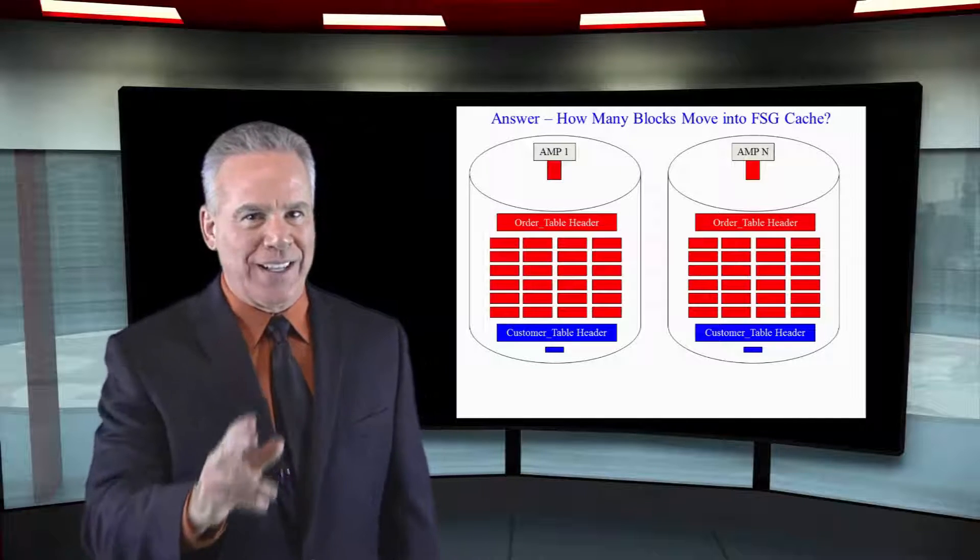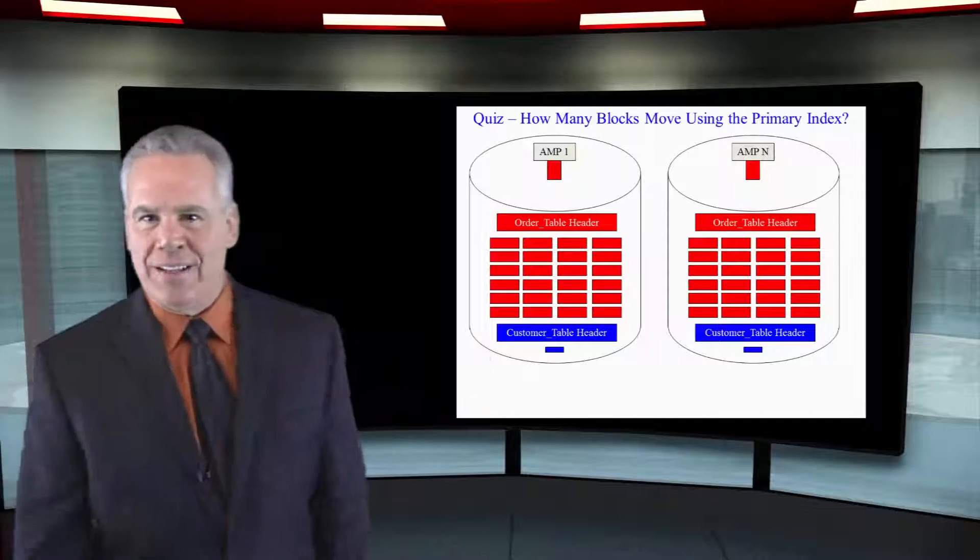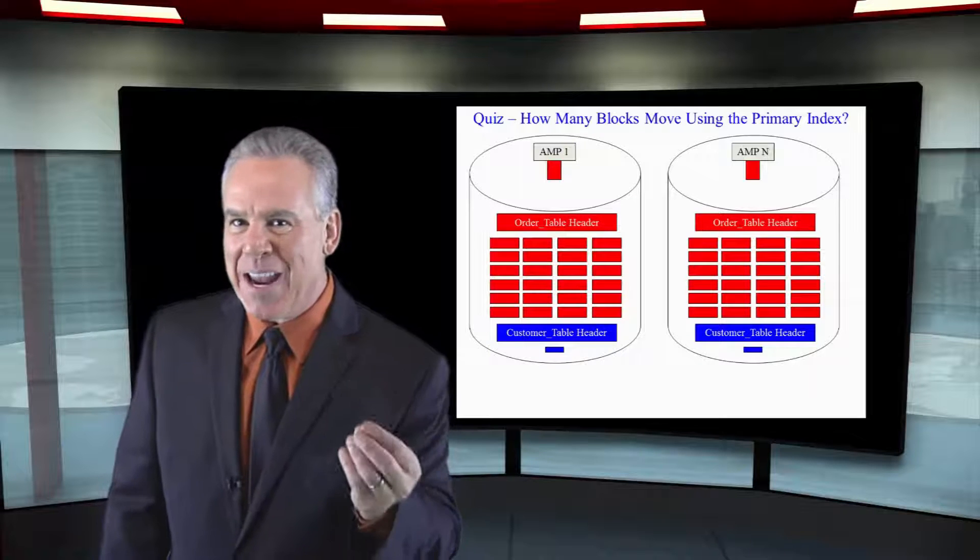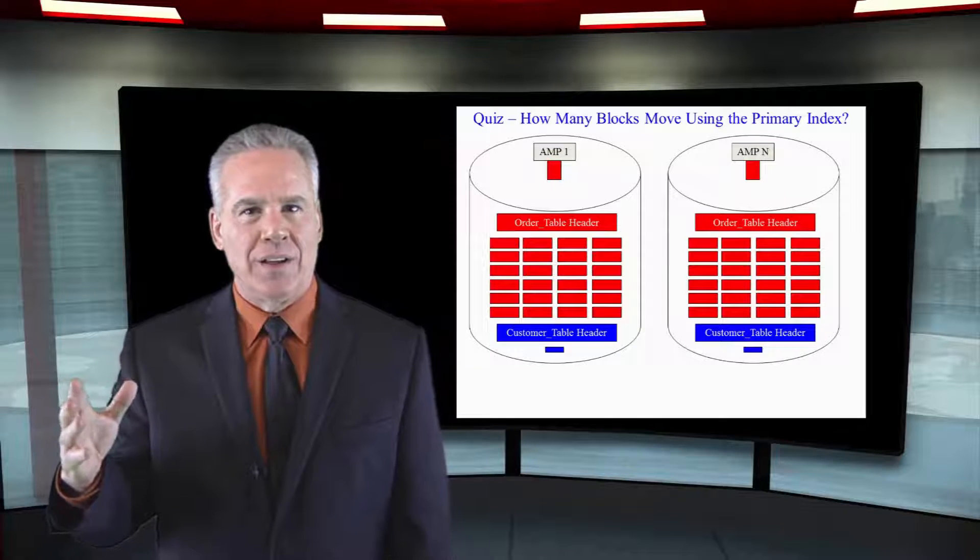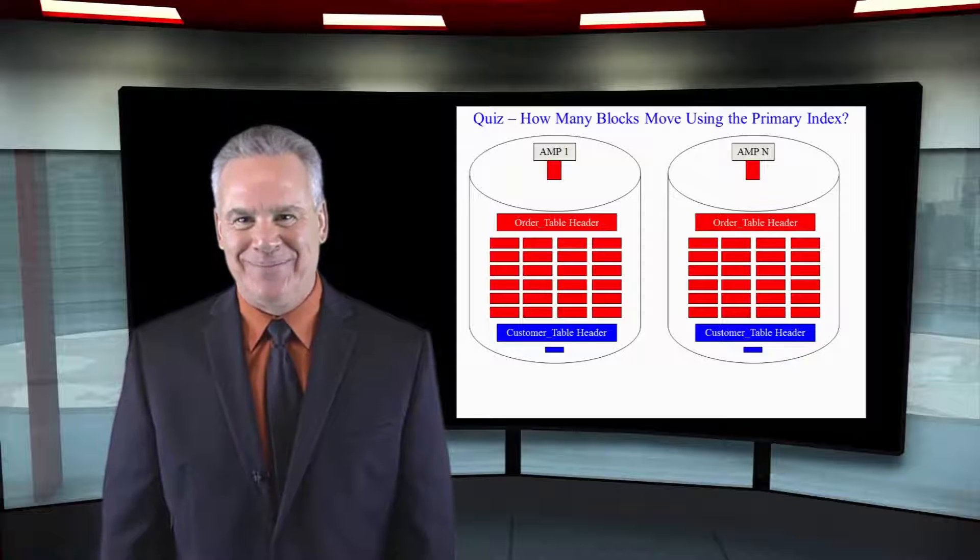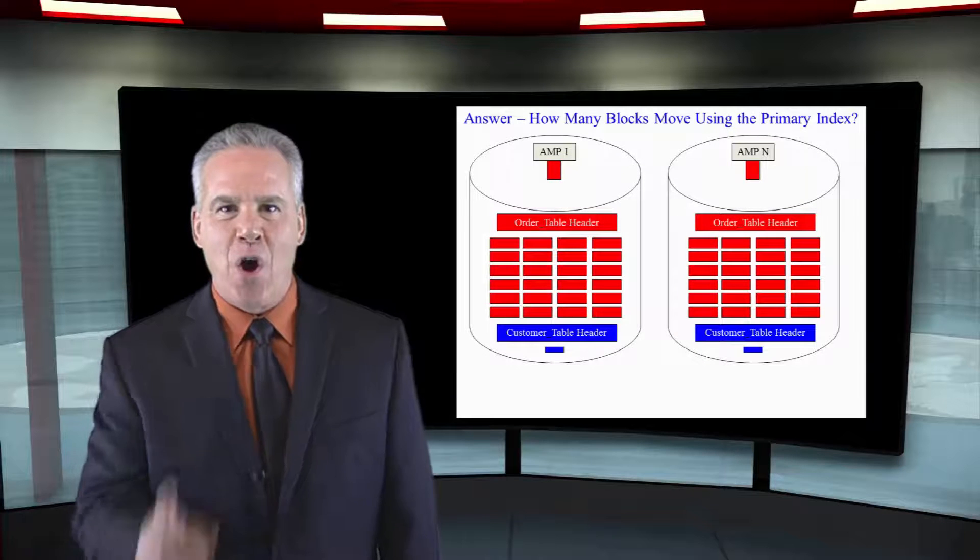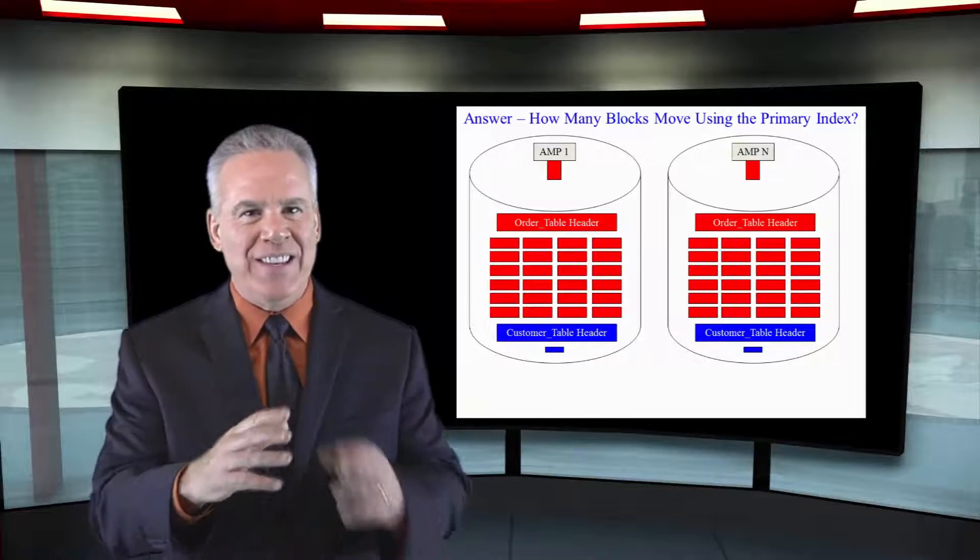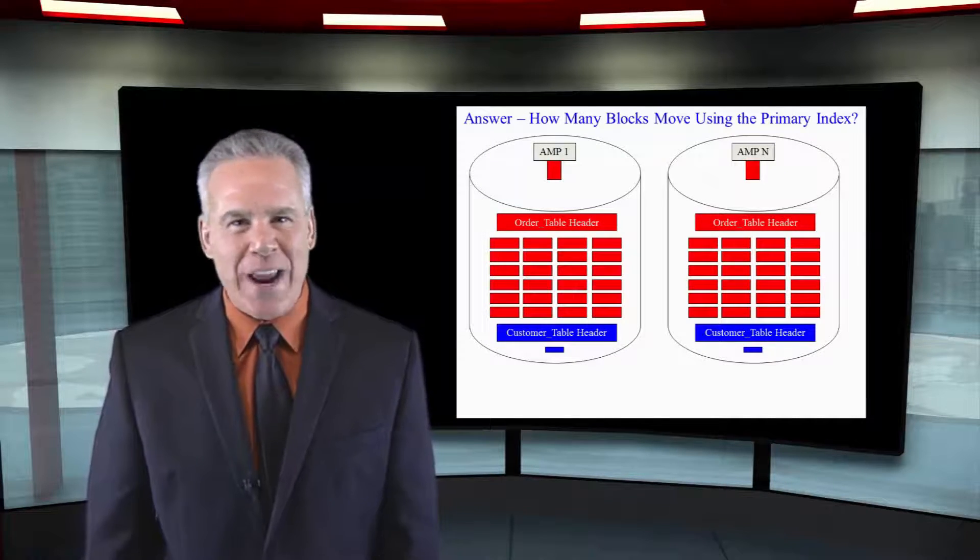Now I'm going to ask you a really interesting question coming up, so get ready. Here's that same order table. It's got 24 blocks on each amp. If I use the primary index in the WHERE clause, how many blocks are going to have to move in the entire system? Only one block is going to have to move in the entire system when you use the primary index in that WHERE clause. Great job!